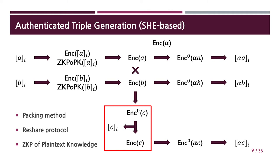In this slide, I will briefly review the SHE-based authenticated triple generation. Recall that the goal is to securely generate shares of A, B, and C satisfying A times B equals C, and additionally shares of alpha*A, alpha*B, and alpha*C, where alpha is a global MAC key. The protocol starts by each party choosing random values A_i and B_i. The shared values A and B are defined by these additive shares. Then each party encrypts these shares and broadcasts them with a so-called ZKPoK of plaintext knowledge, which guarantees that they have honestly generated the ciphertext. They then add the ciphertexts to reconstruct A and B in encrypted form. To generate shares of alpha*A, they multiply the encryption of A with a previously generated encryption of MAC key alpha, then perform distributed decryption to share alpha*A.